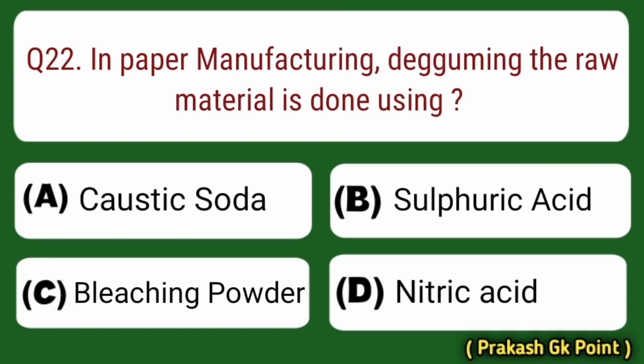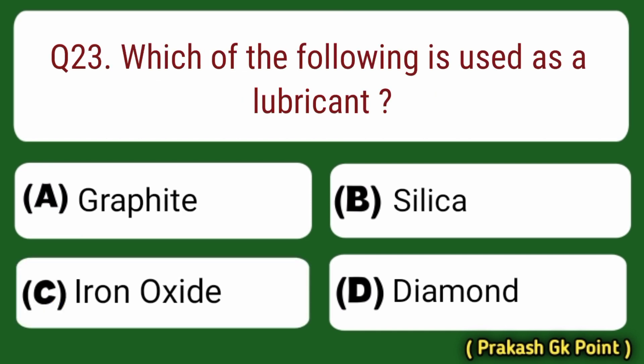Next question: in paper manufacturing, degumming the raw material is done using? Answer: Option C — Bleaching Powder.